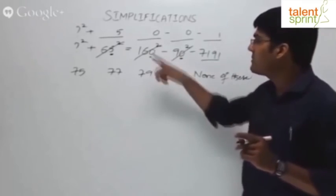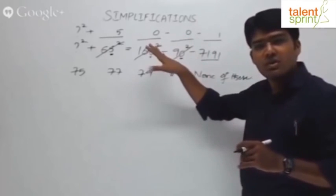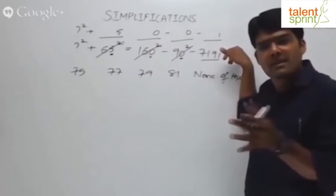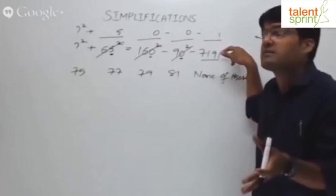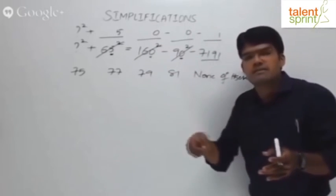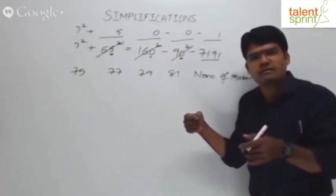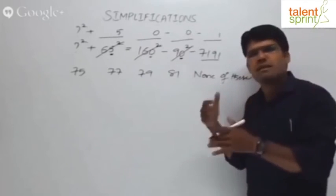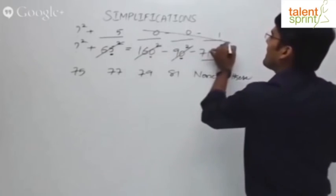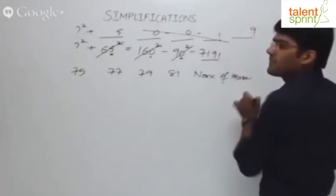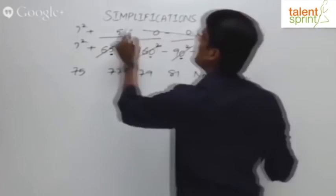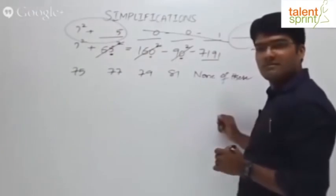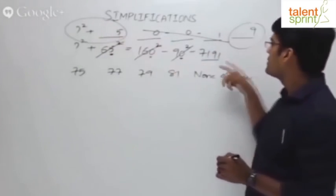I can say that this right hand side here ends in 9. So this right hand side here is going to end in 9. Now try to compare this part with this part. Question mark squared plus 5 should be equal to something ending in 9.